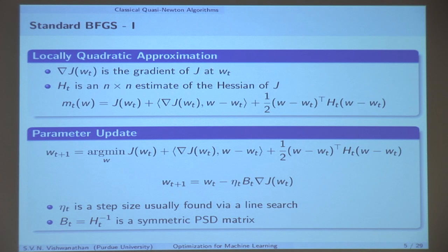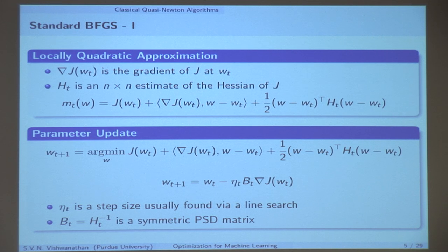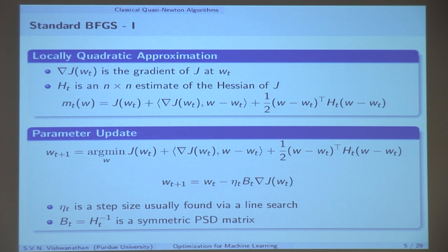If I evaluate the model MT of W at Wt, it must be the case that the gradient of this model equals the true gradient of my objective function — in other words, gradient of J at Wt. If you set W equals Wt and take the gradient, you immediately see that you get the gradient back, which is not very surprising.